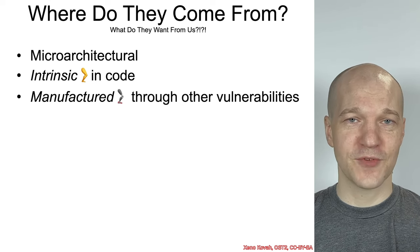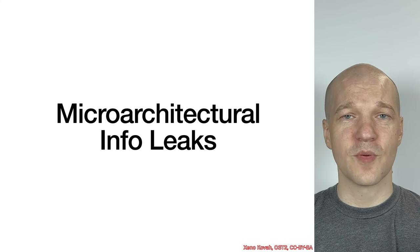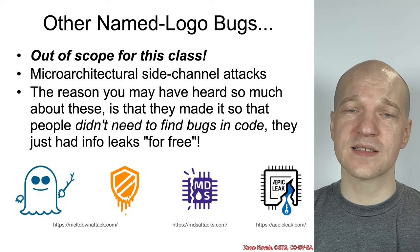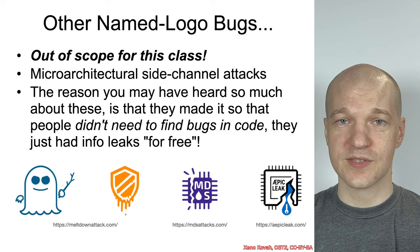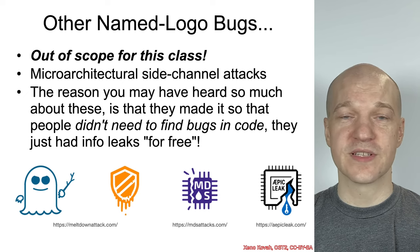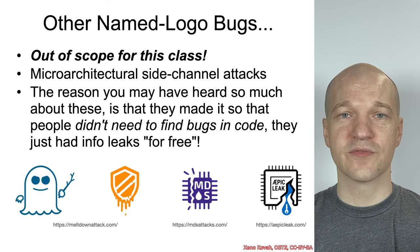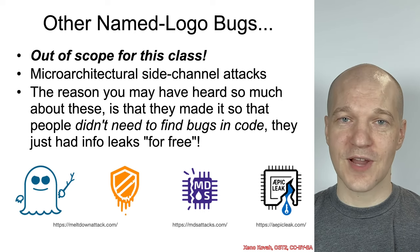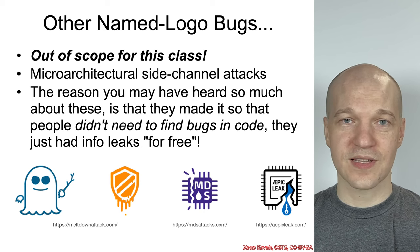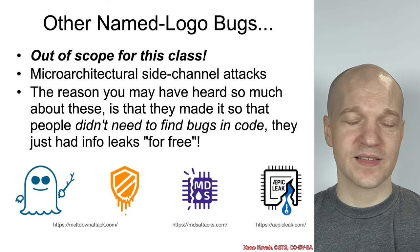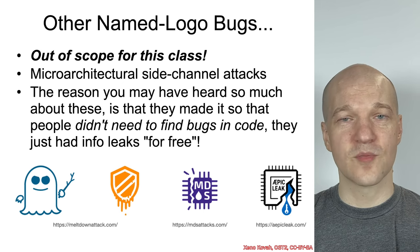So there are different types of infoleaks to consider: microarchitectural, intrinsic, and manufactured. Microarchitectural vulnerabilities are out of scope for this class — just like with race conditions, we put some out of scope because the recommendations wouldn't be related to anything else in the class. Similarly, microarchitectural vulnerabilities are absolutely important infoleak vulnerabilities, but the guidance for mitigating them is going to be completely and wildly different depending on the particular architecture and vulnerability. So out of scope for now, maybe in a future class.